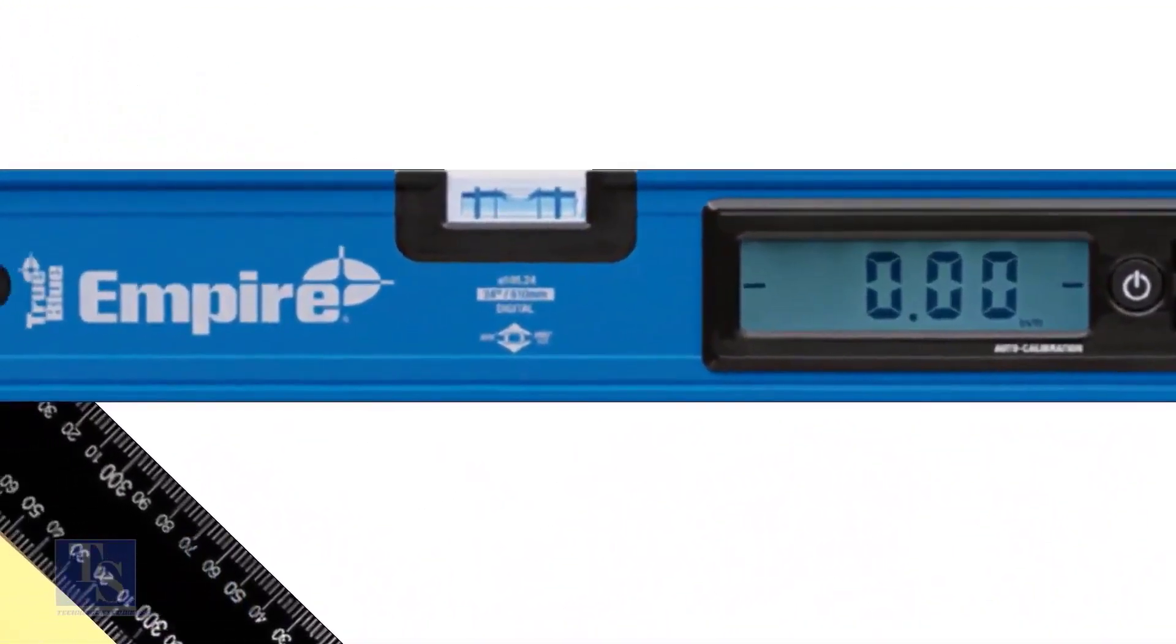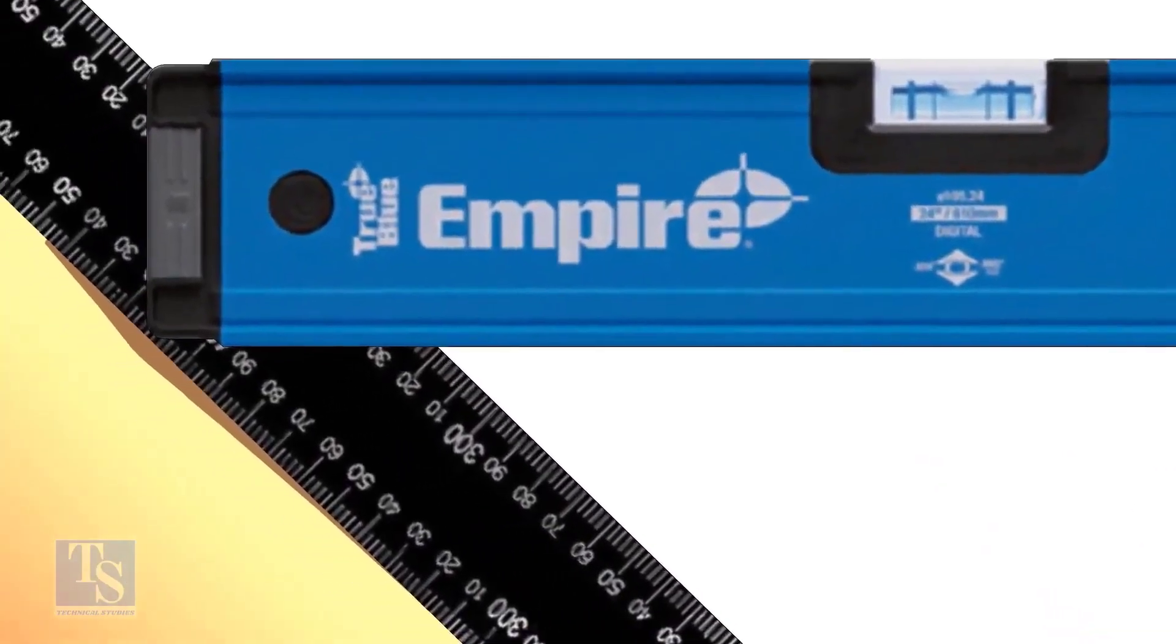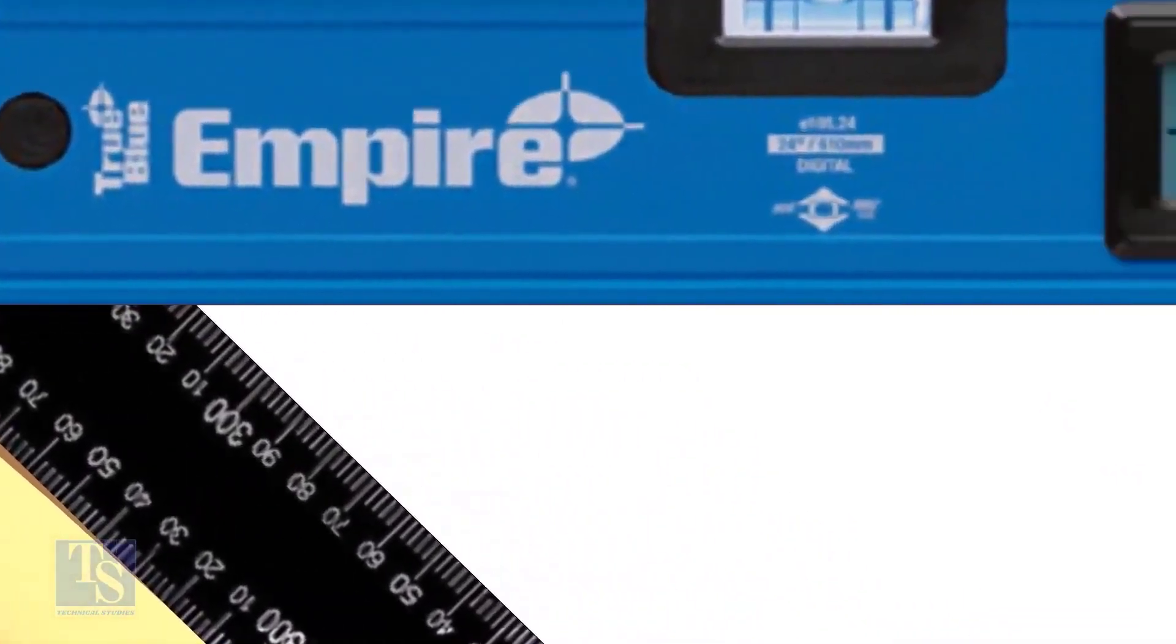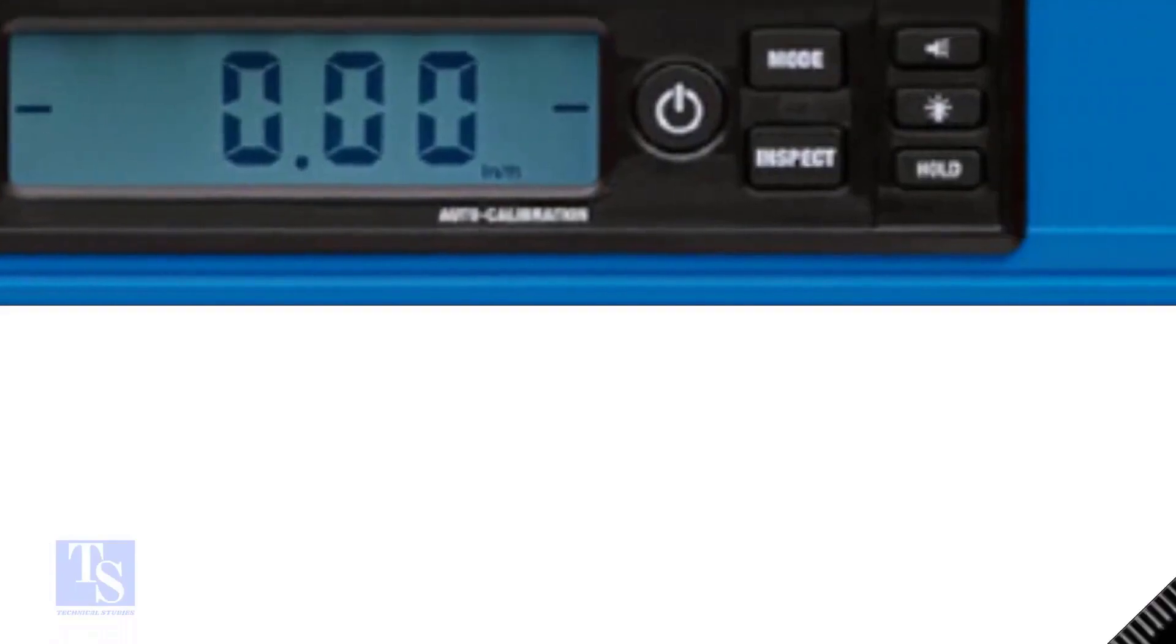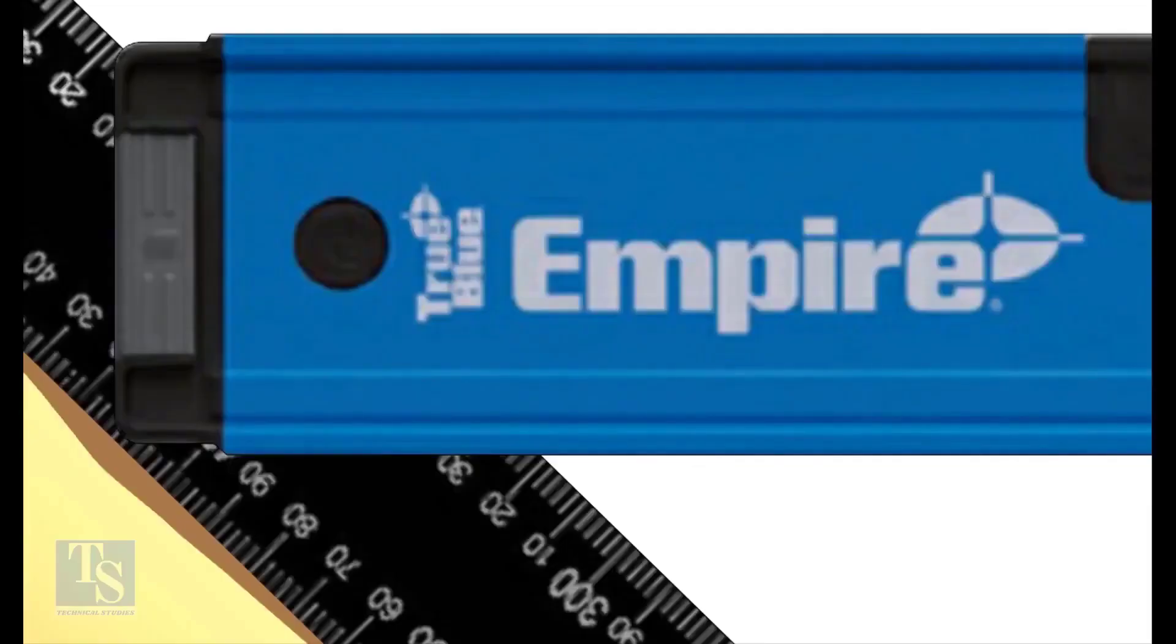Note down the reading where the spirit level edge touches the unit scale on the right angle. The reading on the left side is 320 mm, and the reading on the right side also is 320 mm.